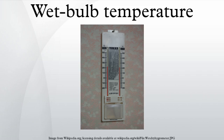Wet bulb temperature is largely determined by both actual air temperature and the amount of moisture in the air. The thermodynamic wet bulb temperature is the minimum temperature which may be achieved by purely evaporative cooling of a water-wetted, ventilated surface. For a given parcel of air at a known pressure and dry bulb temperature, the thermodynamic wet bulb temperature corresponds to unique values of relative humidity, dew point temperature, and other properties. The relationships between these values are illustrated in a psychrometric chart.